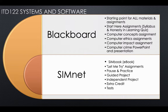The last thing in SimNet is the tests. There are five tests in this class: the first one on Windows, then one on Word, one on Access, one on Excel, and one on PowerPoint. That's how the assignments and materials are distributed across the two systems.